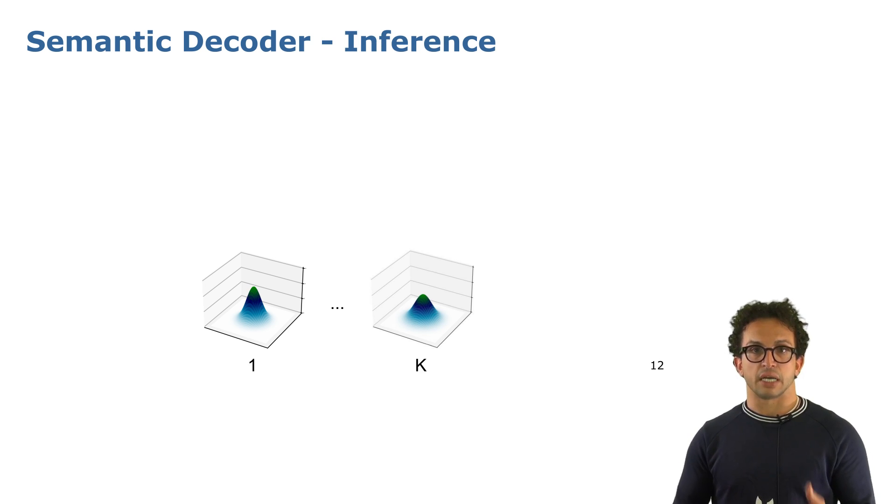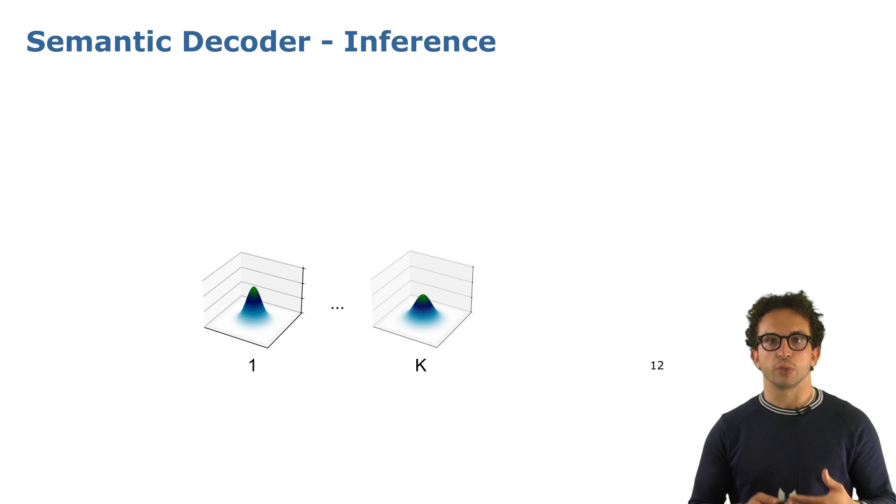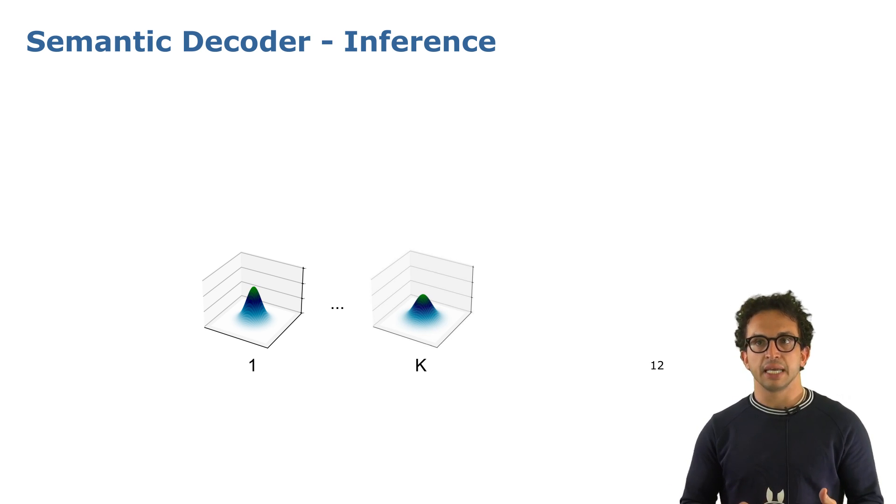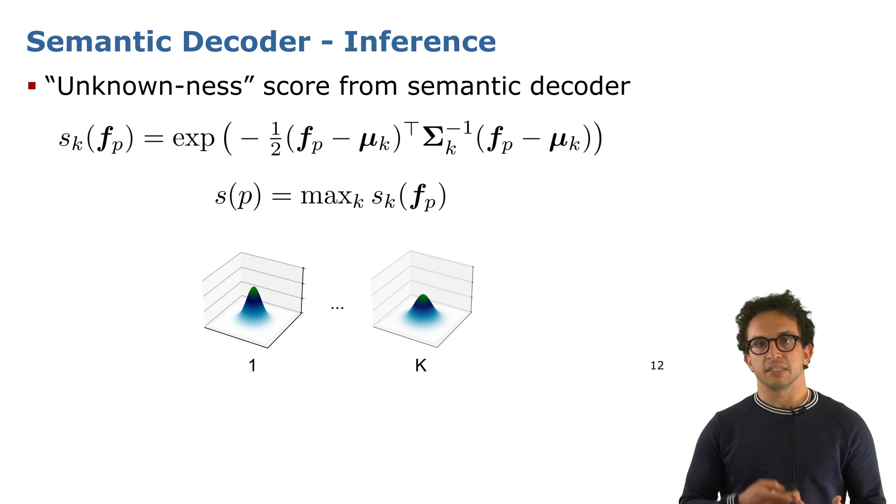What happens then is that at inference time we have the Gaussians because we have the final mean and the final variance, and given a pixel p and its feature f that has been predicted when deploying the network.